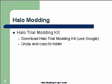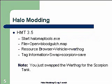The first tool we're going to look at is HMT 3.5 — this is the easiest tool to use. We're going to start inside the folder and run HaloMapTools.exe. This will start up, and inside it we're going to be following these instructions: File, Open, the Blood Gulch map.